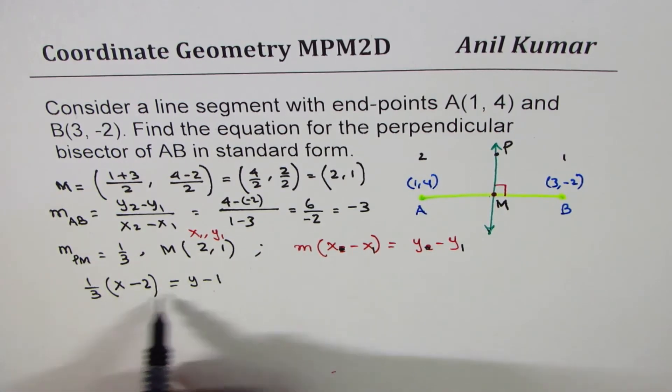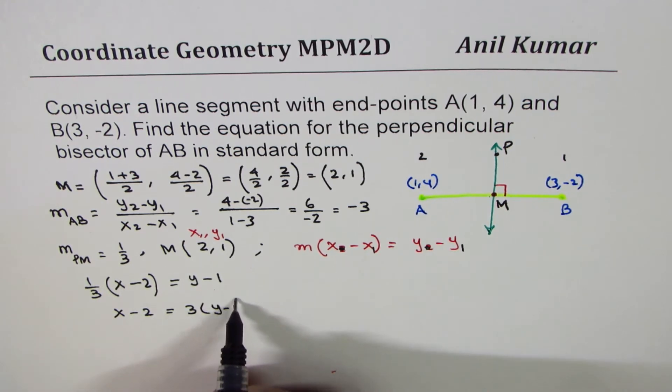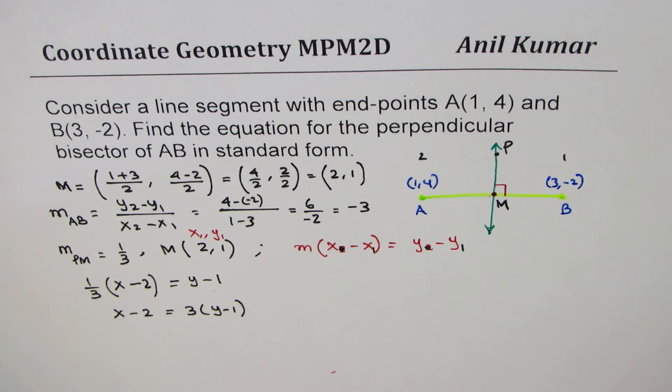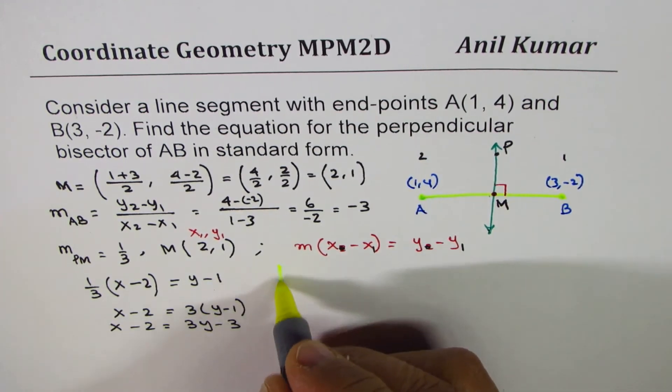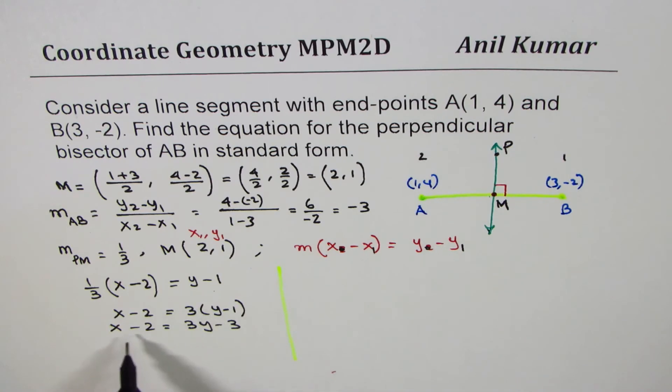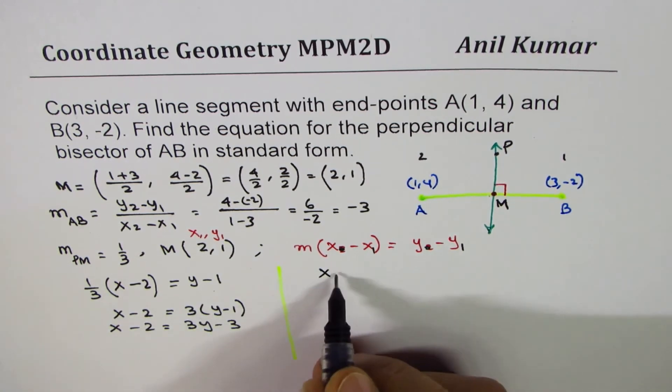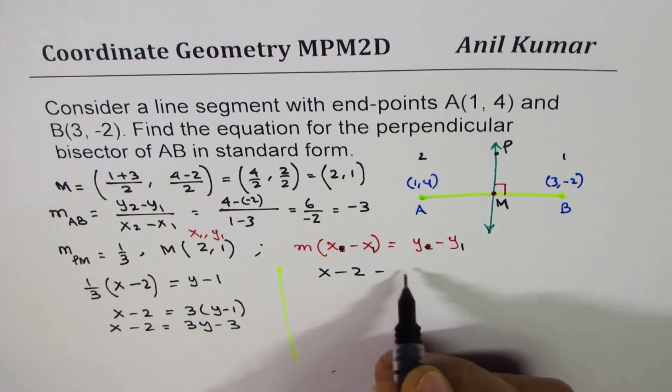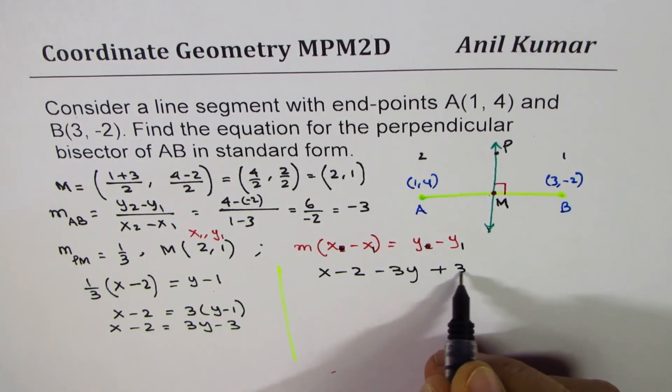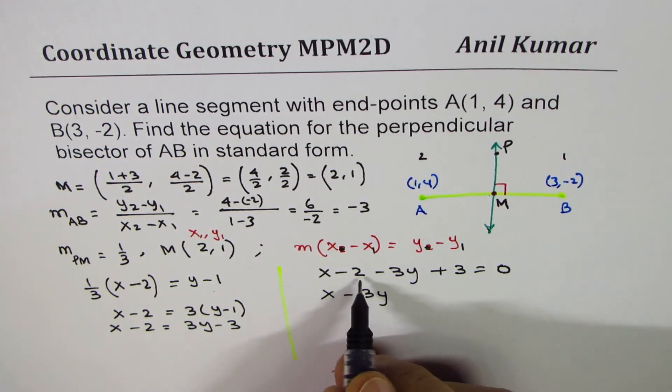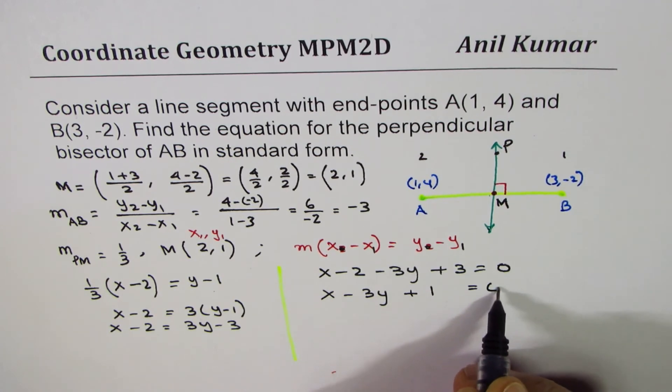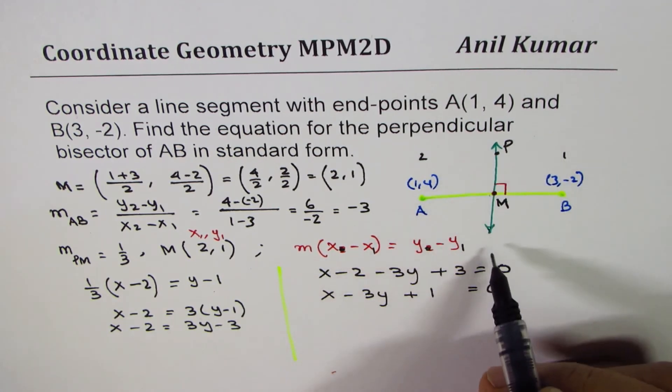Now, we can cross multiply. So we have x minus 2 equals to 3 times (y-1). And now, we can open this bracket. So, we get x minus 2 equals to 3y minus 3. I will take it to the right side and complete the solution. So, we have x minus 2. We will bring these terms to the left side. Minus 3y plus 3 equals to 0. So, we get x minus 3y minus 2 plus 3 is plus 1 equals to 0. So, that becomes the equation of perpendicular bisector.